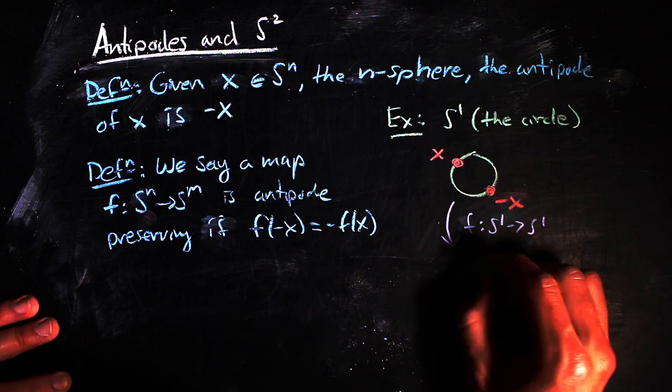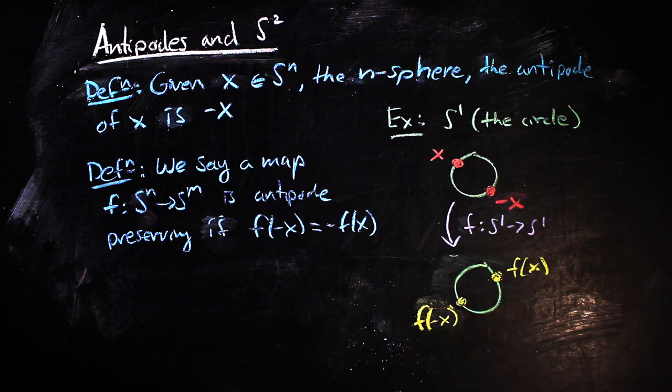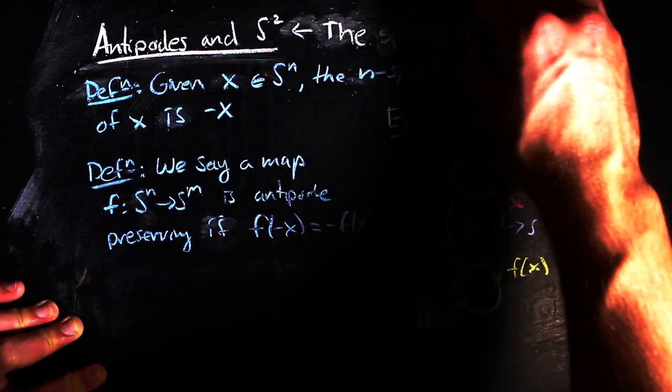That is, if we have an antipodal pair on our domain, after we map, we will get another pair of antipodes. In order to think about these things effectively, we're going to have to back up and talk about covering maps and homotopy.